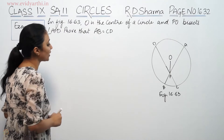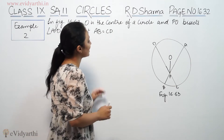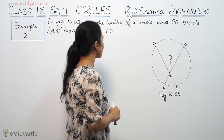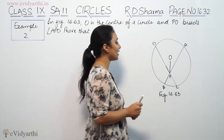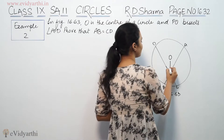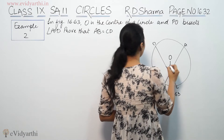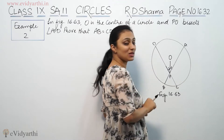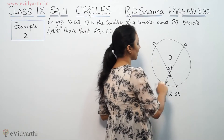O is the center of a circle and PO bisects angle APD. That means angle 1 and angle 2 are equal. We are given that AB is equal to CD — AB ko CD ke equal prove karna hai.